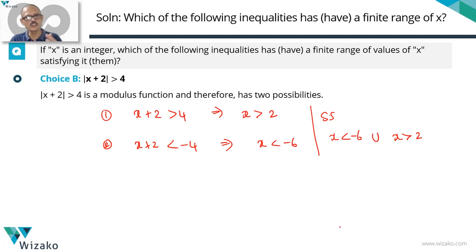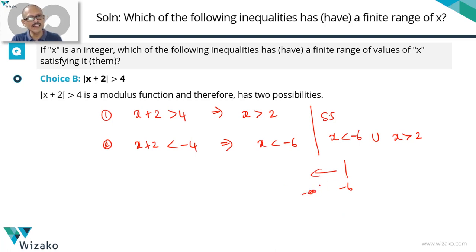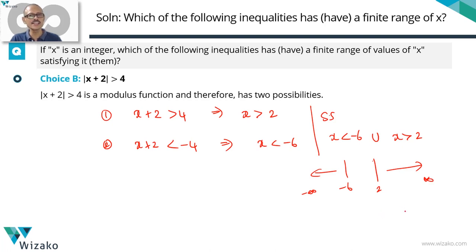Drawing the number line: if x < −6, it starts from −6 and goes all the way to minus infinity — infinite values. If x > 2, it goes all the way up to infinity. So the solution set for option B also gives an infinite range of values of x. Choice B is not the answer.